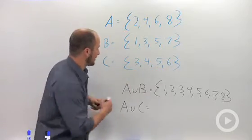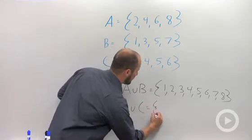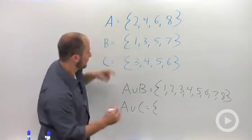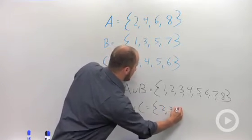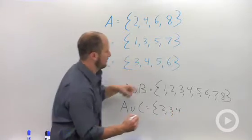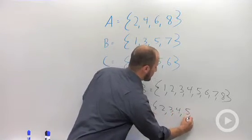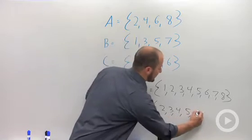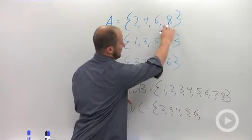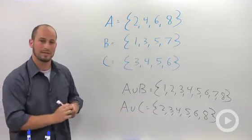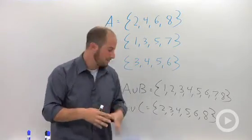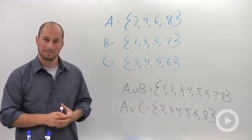So A and C is going to be the number, start with 2. We then include 3 from C, 4 in both, 5 from C, 6 from C, and 8 from A. So the union of the two, the collection of the two, gives us the set of numbers. Okay.